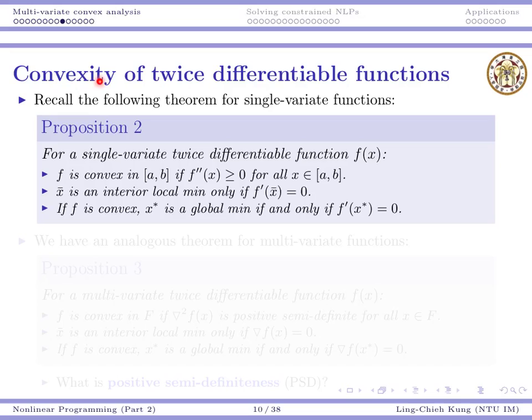To show that our functions are convex, let's recall the theorem for single-variate functions. If a single-variate function is twice differentiable, we know the following three things: f is convex in a region if the second-order derivatives are non-negative for all x in this region. A point is an interior local minimum only if the first-order derivative is zero.